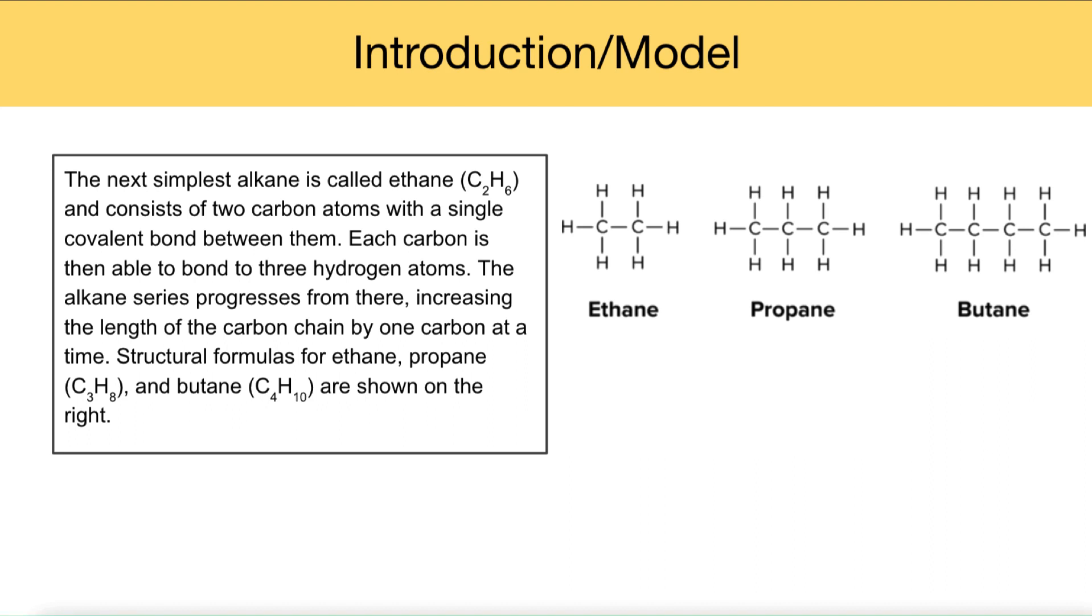The alkane series progresses or increases from there, increasing the length of the carbon chain by one carbon at a time. Structural formulas for ethane, propane, and butane are shown on the right.